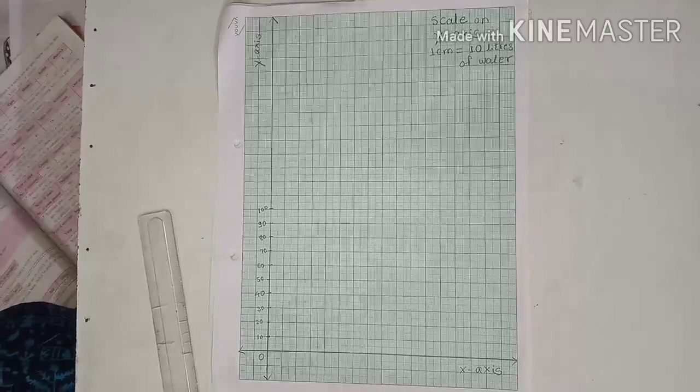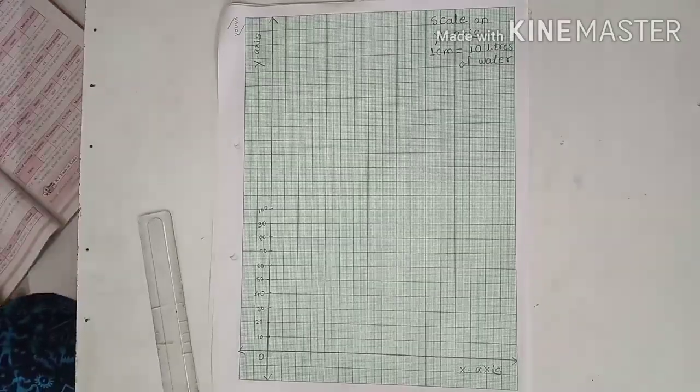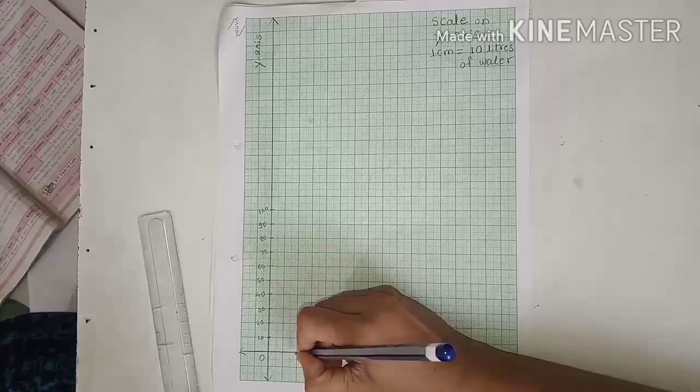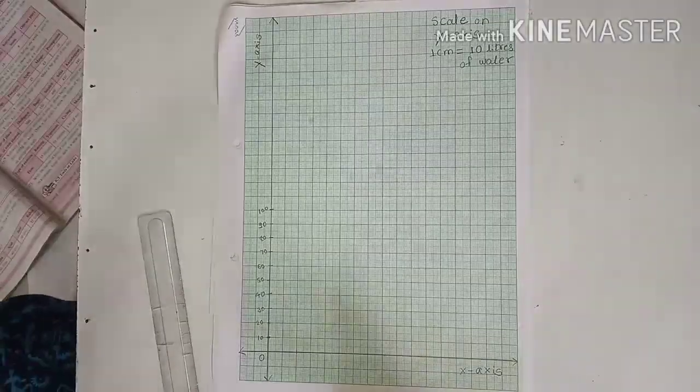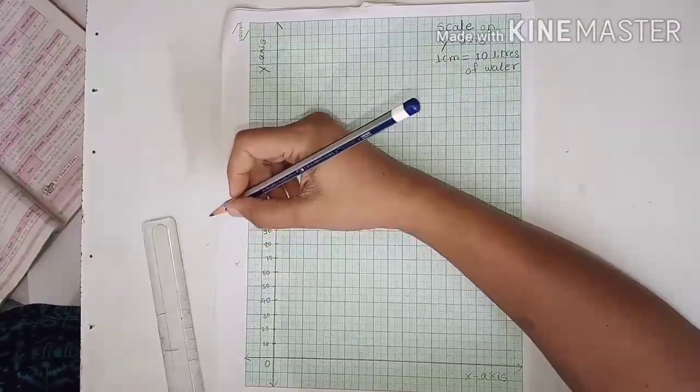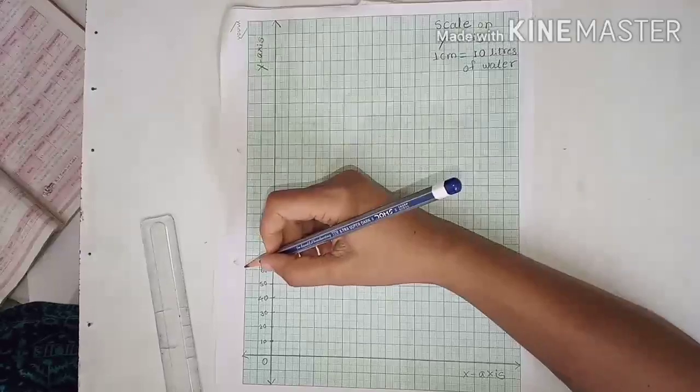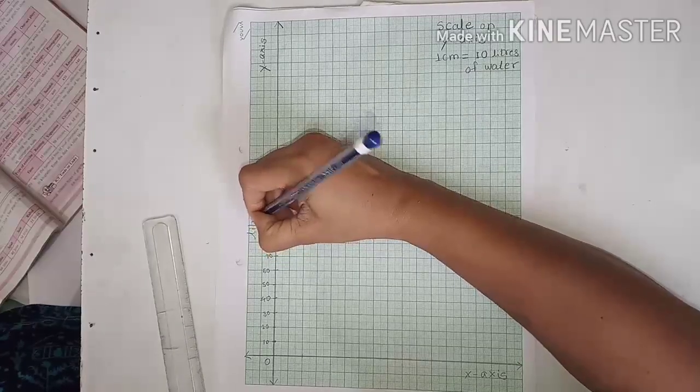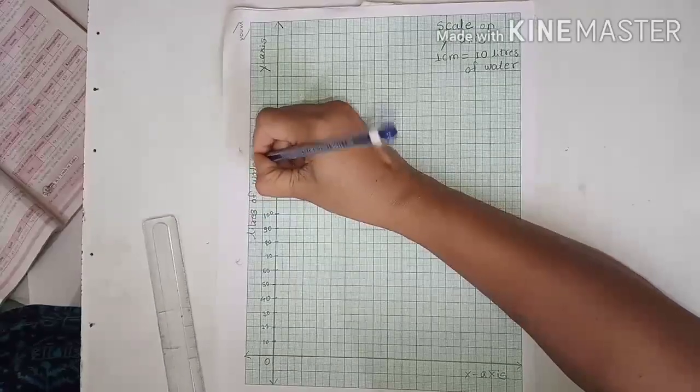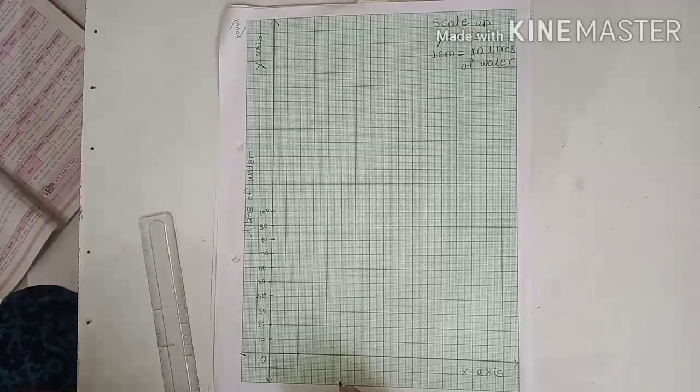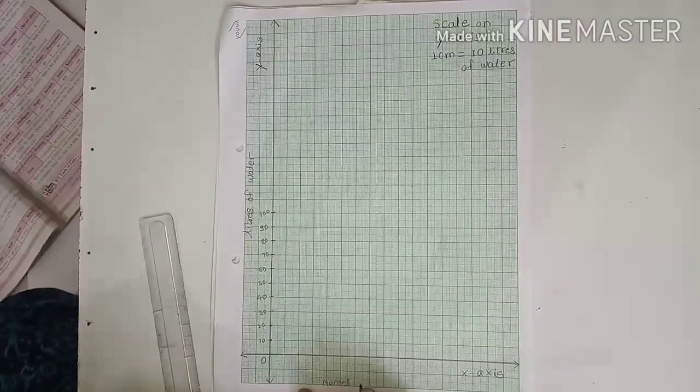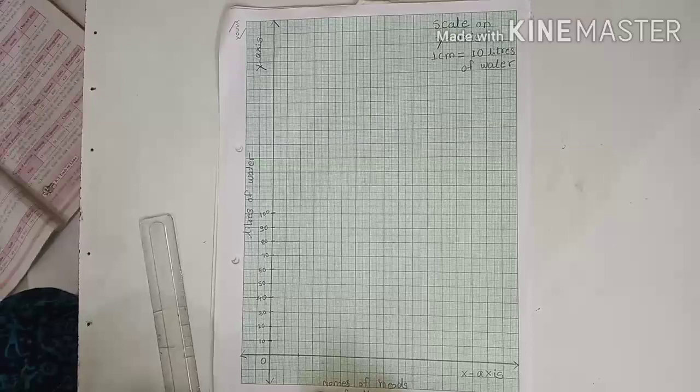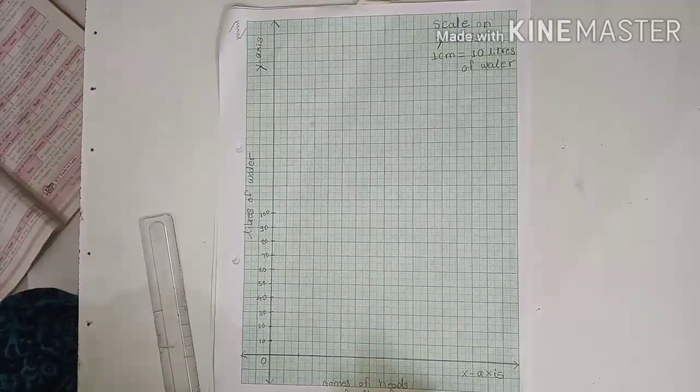Y-axis, we are putting numbers or liters of water used by that particular family. On x-axis we have to write the head of the families. We have to write here water, liters of water. And on this x-axis, names of heads of the family.